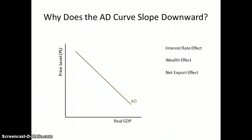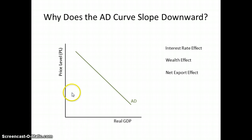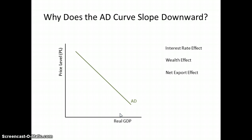The next is the net export effect, which simply means that at high price levels a nation's exports are more expensive, so foreign consumers don't buy as many. At lower price levels, this nation's exports seem cheaper to foreign consumers and so they buy more. In each of these three cases, we get a tendency for the aggregate demand curve to slope downward to the right as graphed against price levels and real GDP.